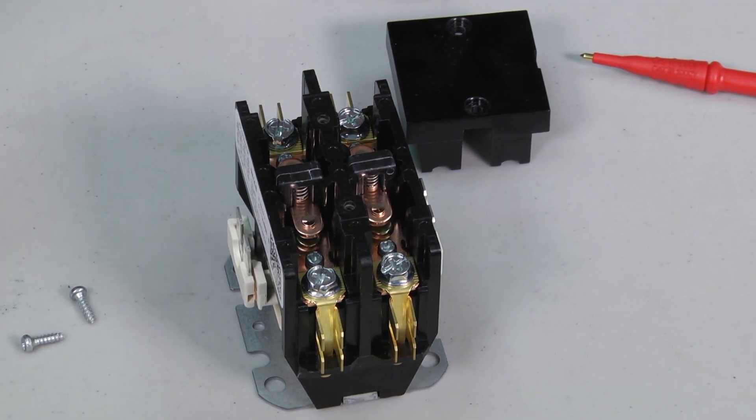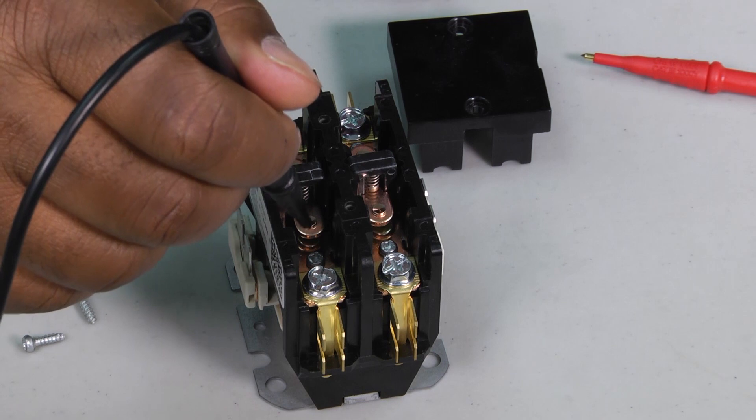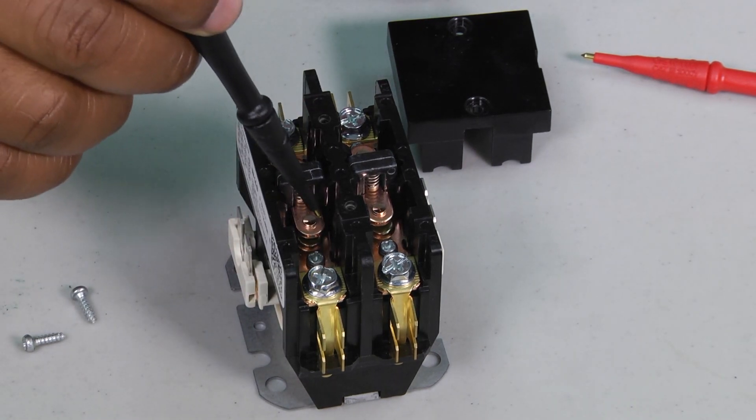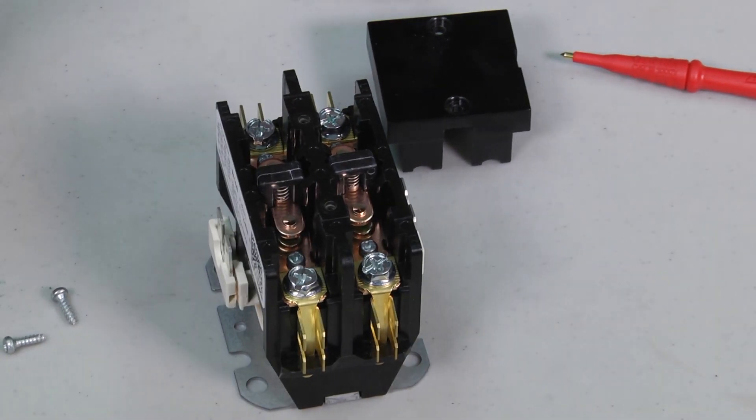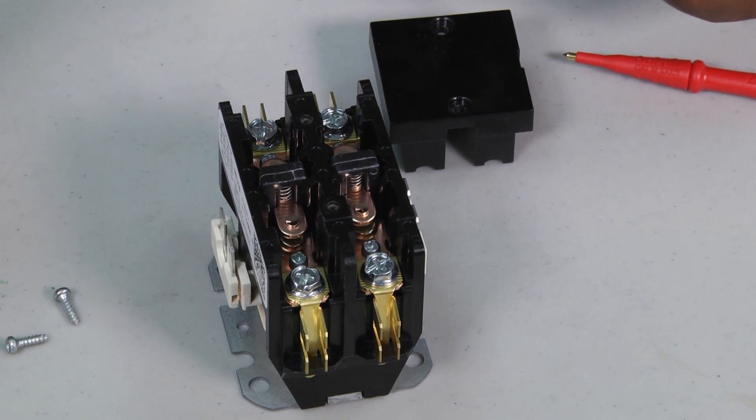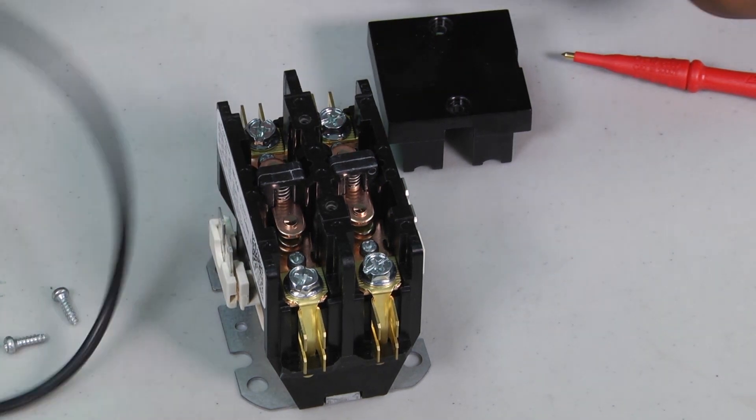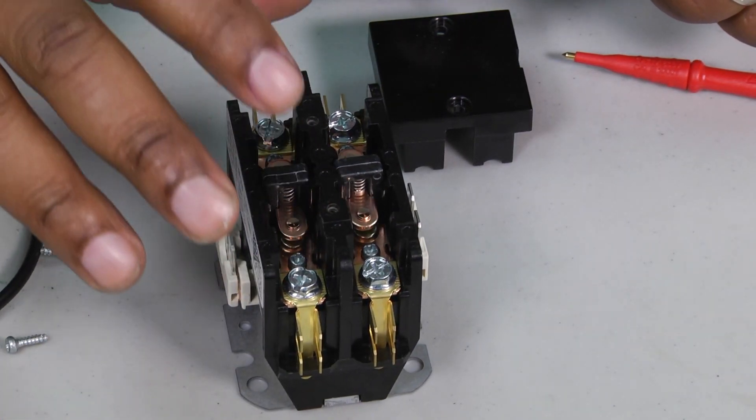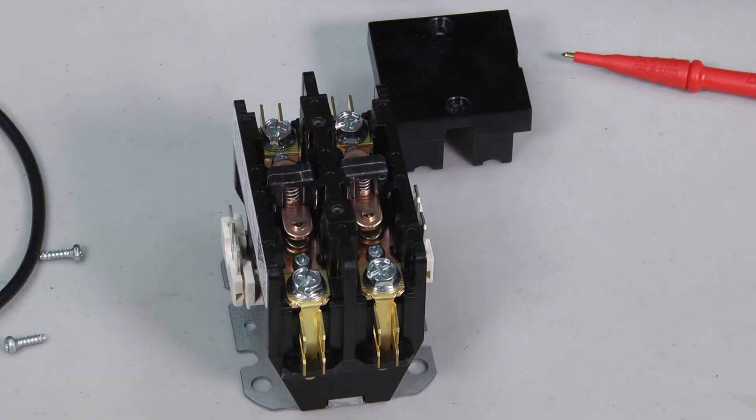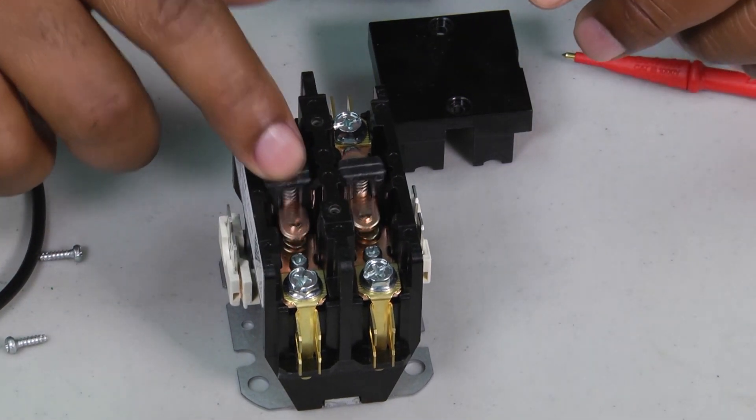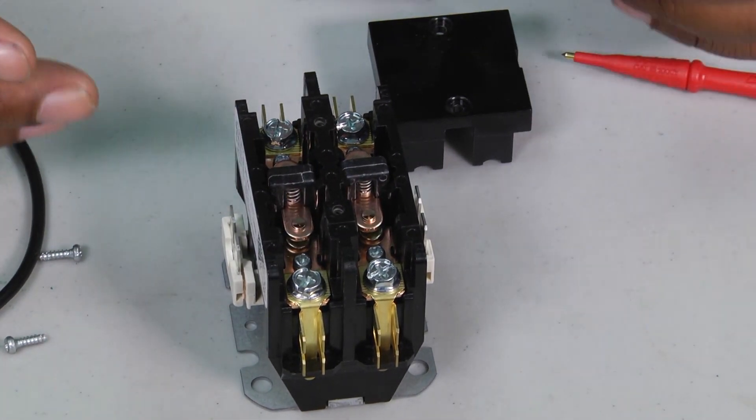Some of the common issues are on the inside, these contacts can become black or pitted from arcing. One of the things is low voltage or lack of voltage to the contactor that causes it to chatter. It'll chatter like that and happen frequently. Every time it does that, there's a little arcing that happens.